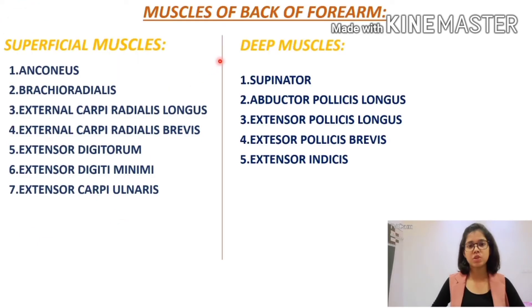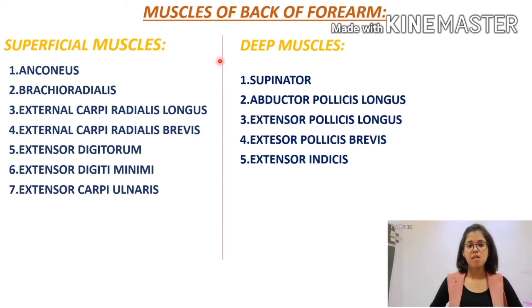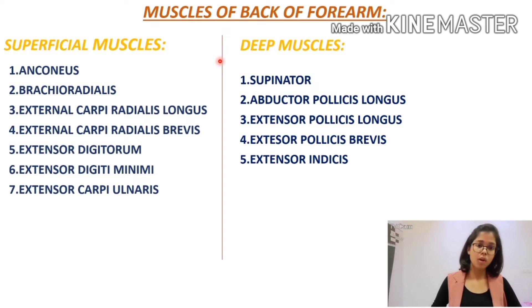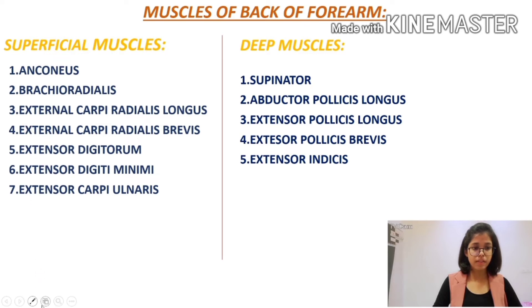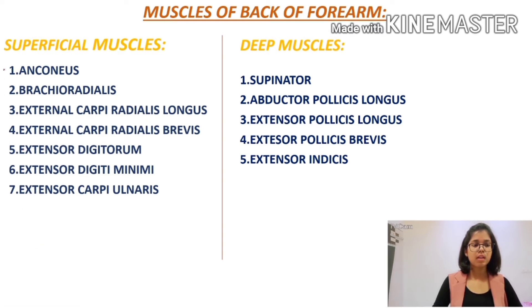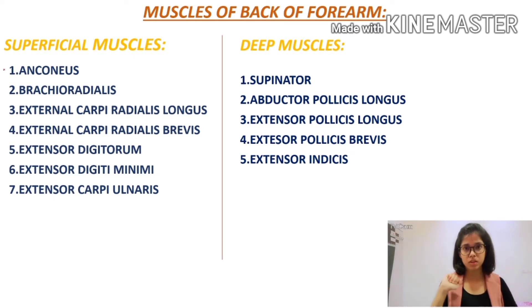Now we are going to study the branches — the muscles that are supplied by this nerve. One important thing to know is that the radial nerve is the nerve of the extensor compartment of the upper limb. The extensor compartment in the arm is comprised only of the triceps brachii muscle, while in the forearm we have muscles in two sets: superficial muscles include seven, and deep muscles include five.